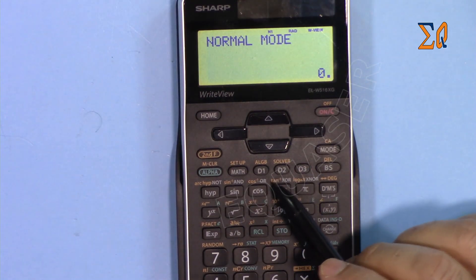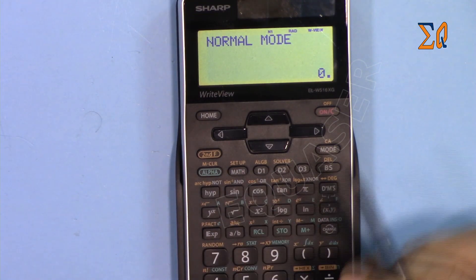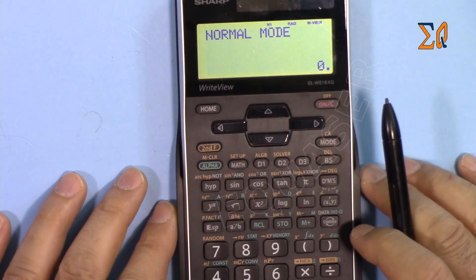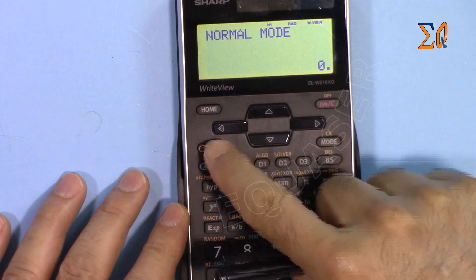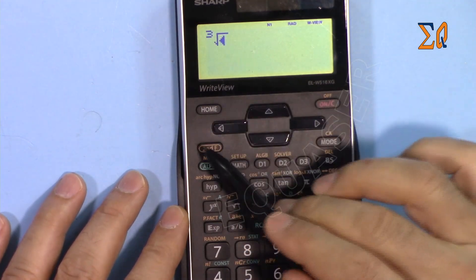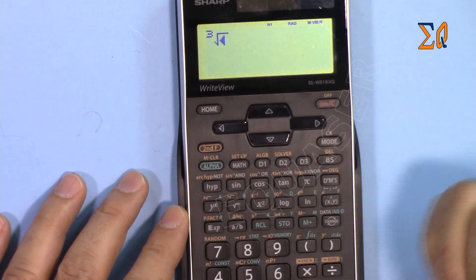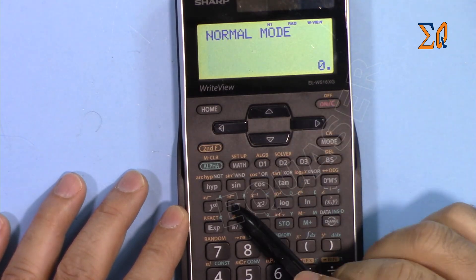These D1, D2, and D3 buttons can be programmed to do any function that you pick from this calculator. For example, if you want to enter a cube root, you have to press the second function and cube. This is an extra button in your calculation, so you can program this to be a cube root because there are two buttons involved.